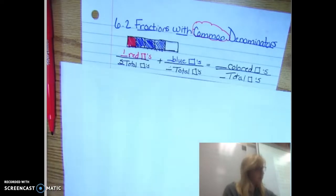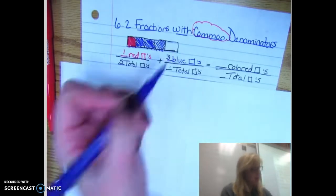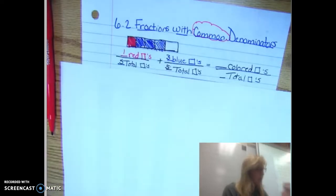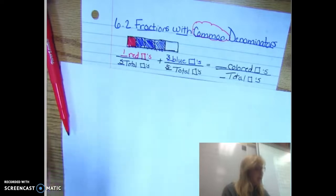And now the blue is three blue squares out of the total of five squares. And so how many fifths have I eaten total?